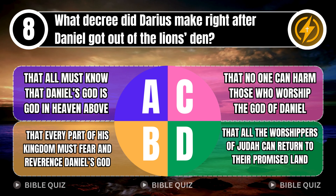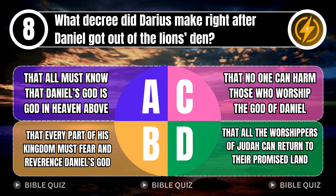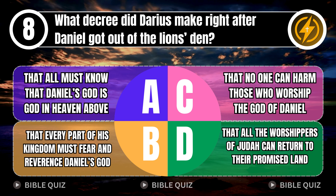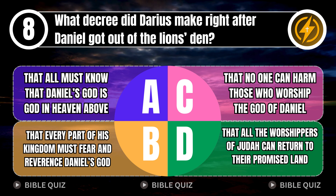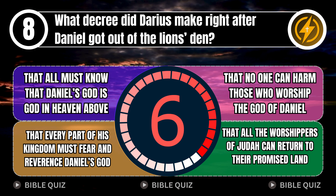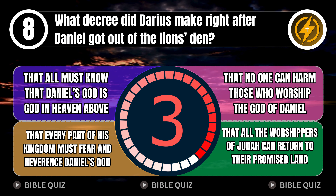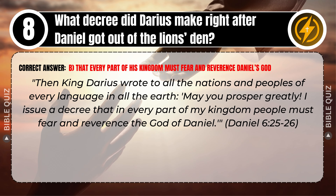Question 8: What decree did Darius make right after Daniel got out of the lion's den? A. That all must know that Daniel's God is God in heaven above. B. That every part of his kingdom must fear and reverence Daniel's God. C. That no one can harm those who worship the God of Daniel. D. That all the worshippers of Judah can return to their promised land. Correct answer: B. That every part of his kingdom must fear and reverence Daniel's God. King Darius wrote to all nations — 'I issue a decree that in every part of my kingdom people must fear and reverence the God of Daniel.' Daniel 6 verses 25–26.